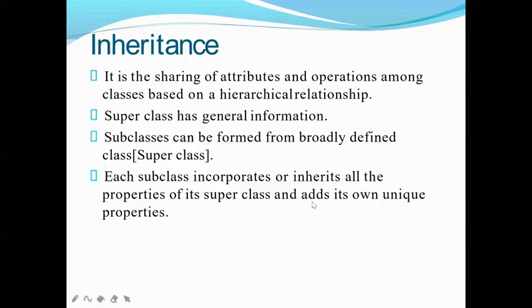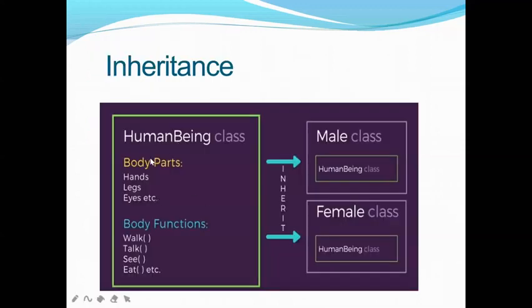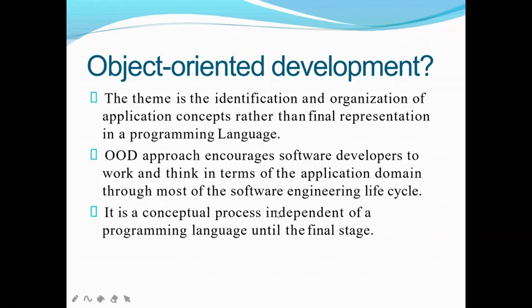A subclass can also add its own unique properties. For example, if the human being class mentions hands, legs, and eyes, the male class can have those properties and also add its own additional properties like nose or anything extra. That is also possible in inheritance. Moving to the next concept, which comes under object oriented development.